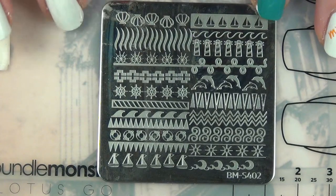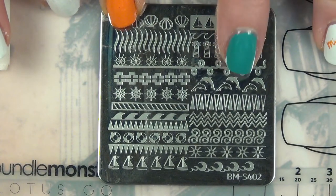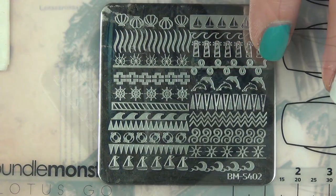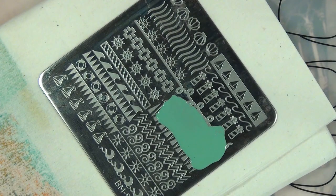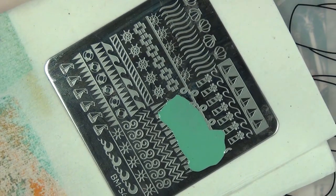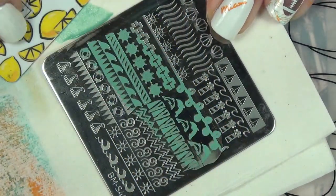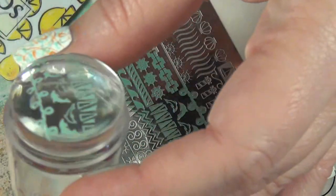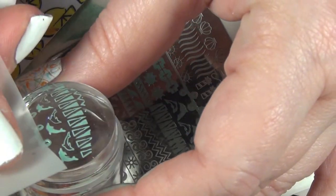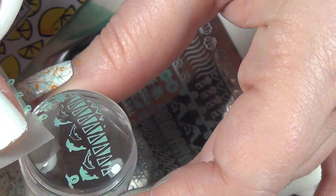Then I'm going to come in with this Bundle Monster square plate, this is from the Hang Loose collection, and I am going to stamp these adorable little dolphins underneath the word Miami on my middle finger. I'm just going to come in with a piece of tape and remove all that excess that I don't want.